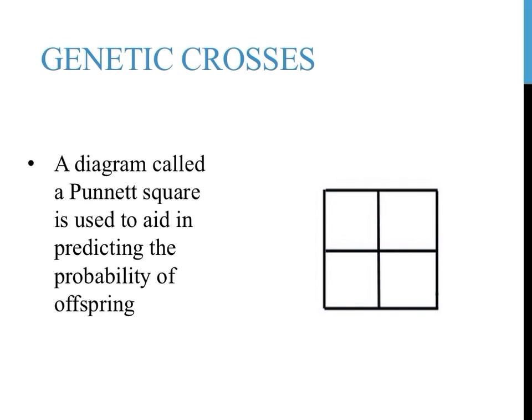Punnett squares are two-by-two squares that are used to determine the probability of different events occurring in genetics. They look quite simple when empty, as shown in the image to the right. The real trick involves figuring out what goes on the outside, what goes on the inside, and how to interpret these results.